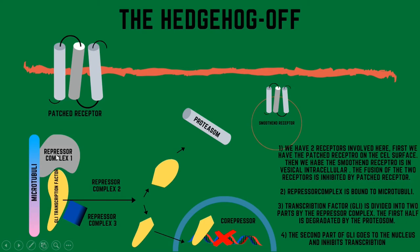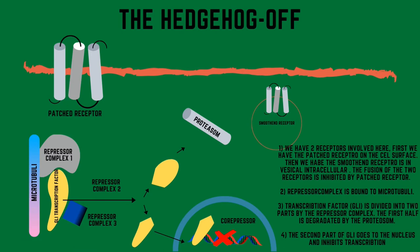So inside the cell, a repressor complex is bound to a microtubule. In this repressor complex, there's a molecule called the transcription factor GLI — the yellow thing. It is constantly divided by the repressor complex into two halves. The first half goes to a proteasome and is destroyed, and the second one goes into the nucleus, binds to the DNA, and acts as a transcription inhibitor. So there's no transcription performed.